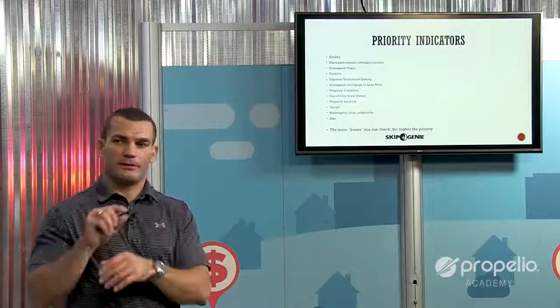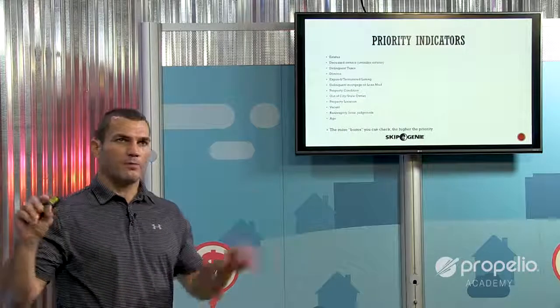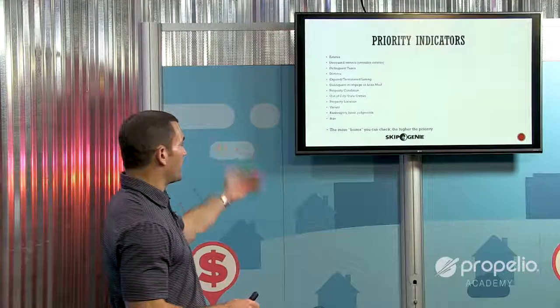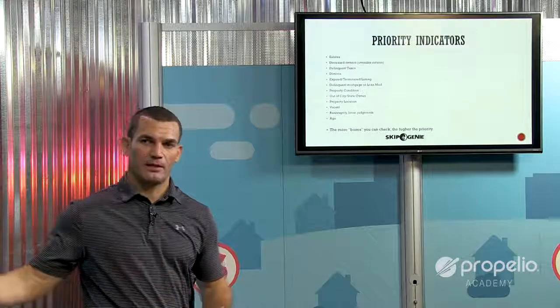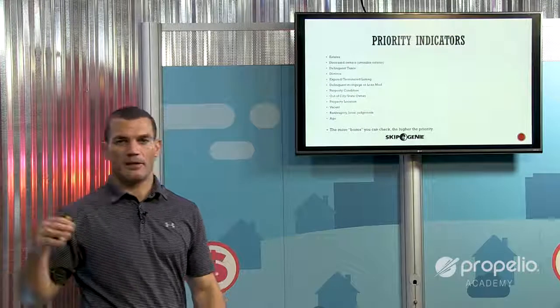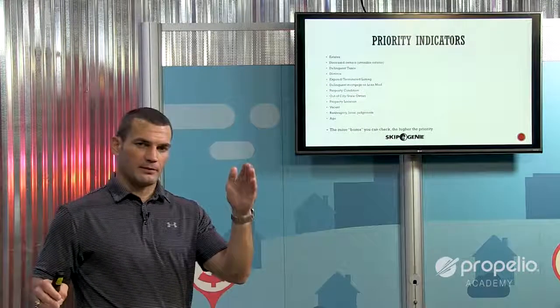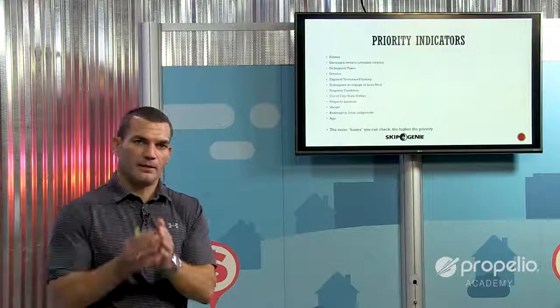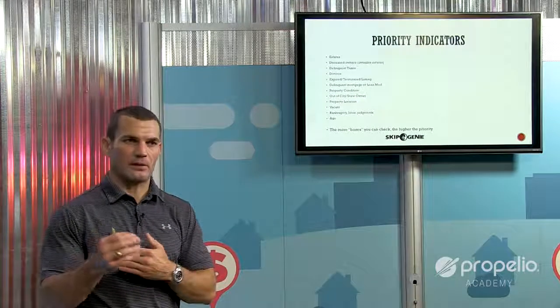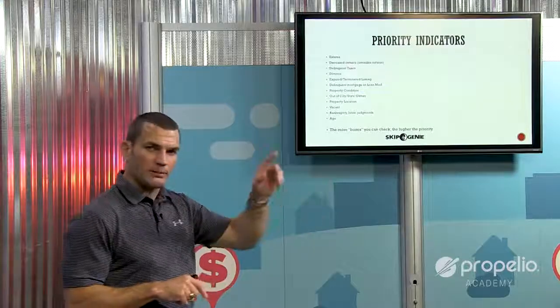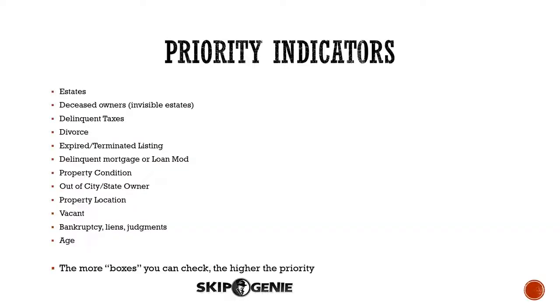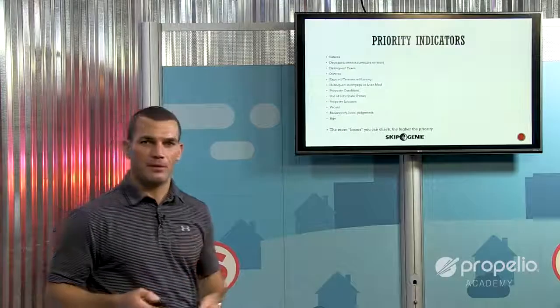Those are the individual different indicators to look for. In the overall process, you're going to prioritize properties that have the most number of those indicators. For example, you may be looking at estates on one list, delinquent property taxes on another, or expired listings on another. But what if you could create a list that had all three of those criteria? Now that's a really good list. I call it 'checking the boxes' — the more boxes you can check on a property, the higher the priority.